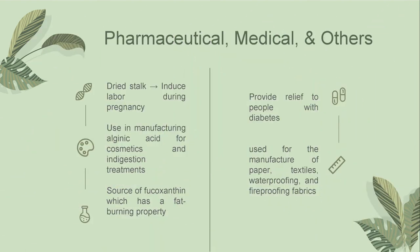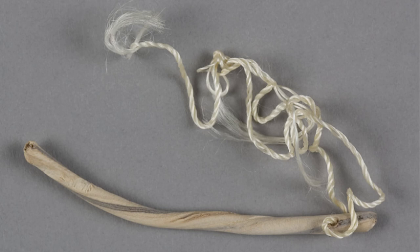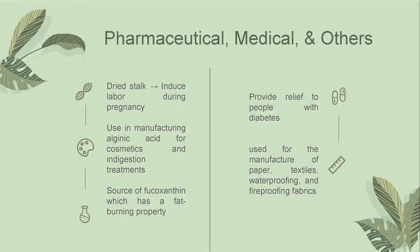Aside from food uses, Laminaria digitata also has a wide variety of roles in pharmacological, medical, and food industries, which make it a very special species. The dried stalks of Laminaria digitata, known as sea tangle tents, were once used to induce labor during pregnancy. A Laminaria tent is a short rod of dehydrated seaweed that, when placed in the cervix, rehydrates by absorbing water from surrounding tissue. When removed, it expands to 10 times its original size, slowly widening the cervix and allowing easier access to the uterus. The constant pressure on the cervix increases the release of endogenous prostaglandins, inducing contractions that prepare the body for fetus ejection. This seaweed is also utilized in manufacturing alginic acid, which is a frequent element in various cosmetics, particularly creaming aids and indigestion treatments. It is also used to provide relief to people with diabetes. Lastly, it applies in the manufacture of paper, textiles, waterproofing, and fireproofing fabrics.